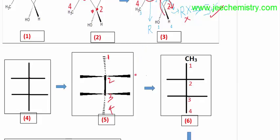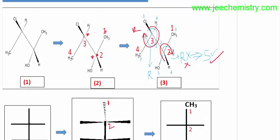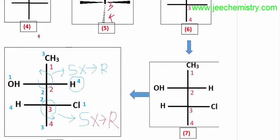I am showing the step-by-step process so that you can understand clearly, but for examination purposes it is not necessary to draw so many structures. In one structure, if this structure is given, you can find the R and S configuration directly — the R configuration will be here and the S configuration will be here — and from this structure we can directly come to the answer.